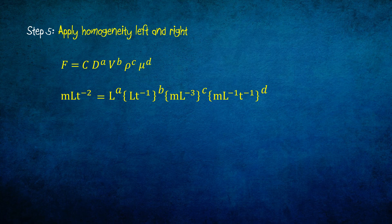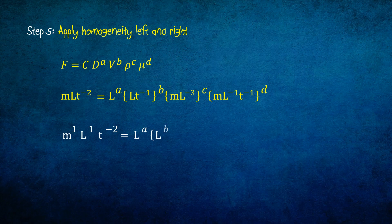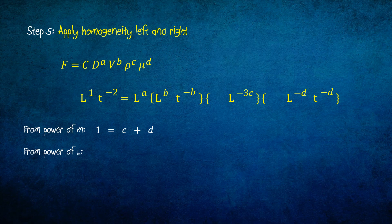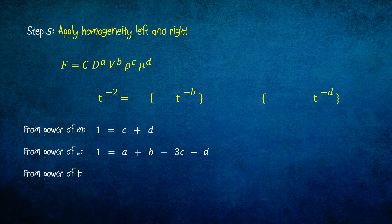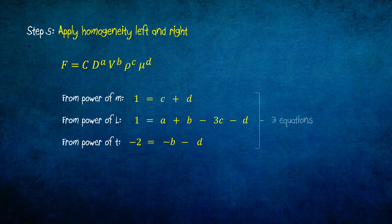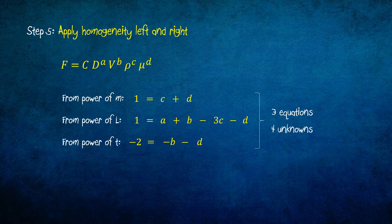Step 5 consists of applying homogeneity on the left and right sides. Let's write the power of each dimension of the MLT equation. We apply homogeneity of the power of M, homogeneity of the power of L, and homogeneity of the power of T. This gives us three equations — one from M, one from L, and one from T — and we have four unknowns: A, B, C, and D.